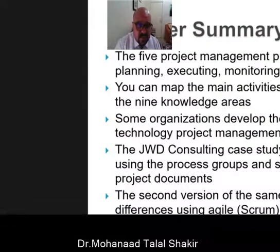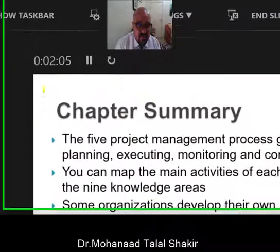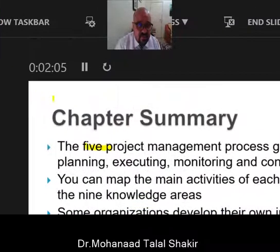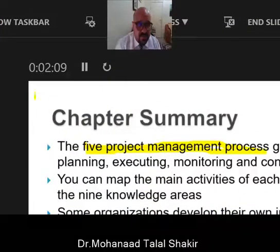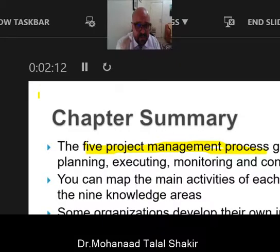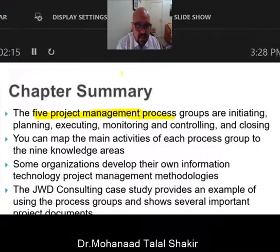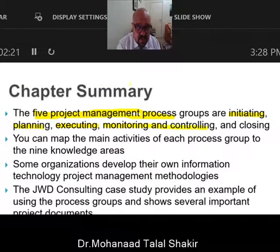In the Chapter 3 summary, we have 5 project management processes: pre-initiation, initiation, planning, executing, and project closing. More completely, these are initiating, planning, executing, monitoring and controlling, and closing. You can map the main activities for each process group to the 9 knowledge areas.